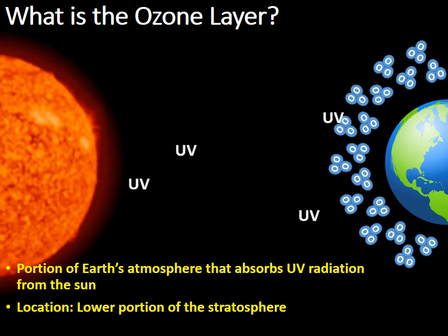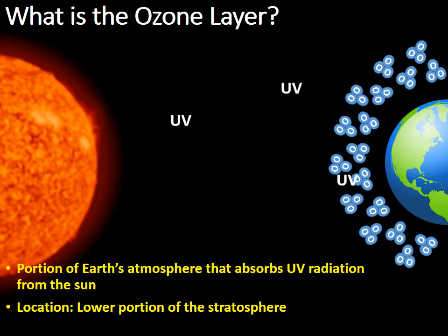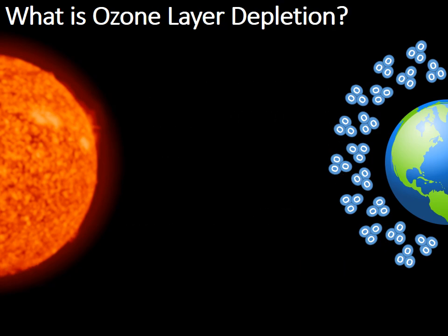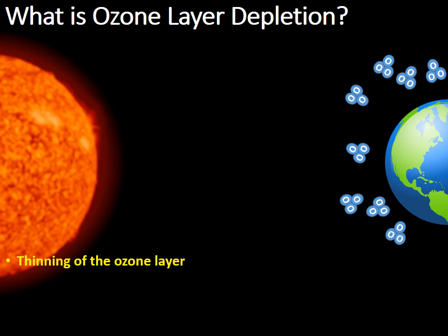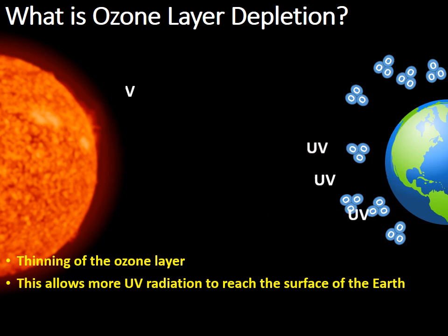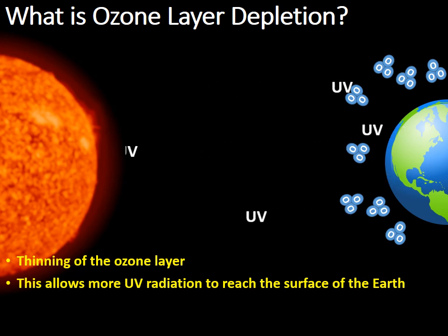What is ozone layer depletion? At this point, the ozone layer is a shield that surrounds the Earth and blocks incoming UV radiation. Ozone layer depletion is the thinning of the ozone layer. Notice how the ozone layer has been thinned due to the use of chlorofluorocarbons (CFCs), and as you see in the animation, this is causing more and more UV radiation to strike the surface of the Earth.